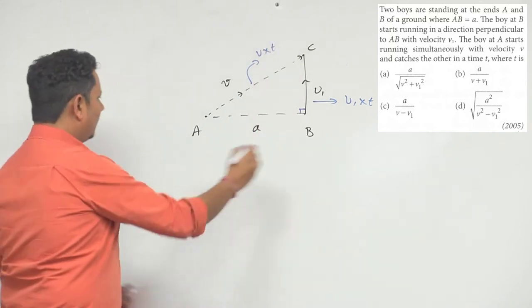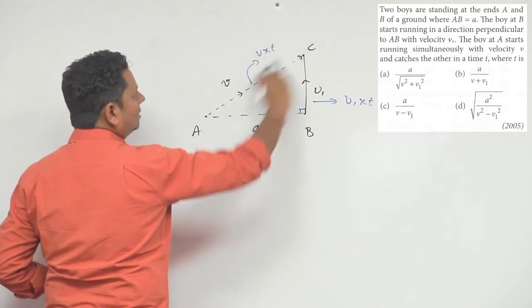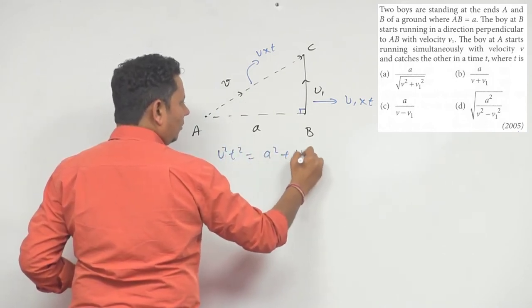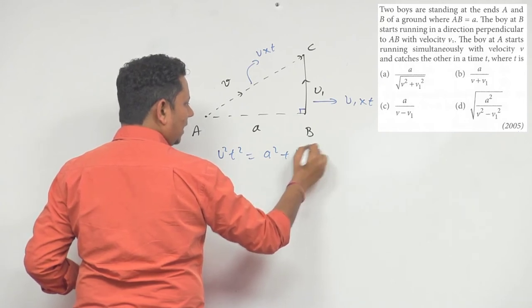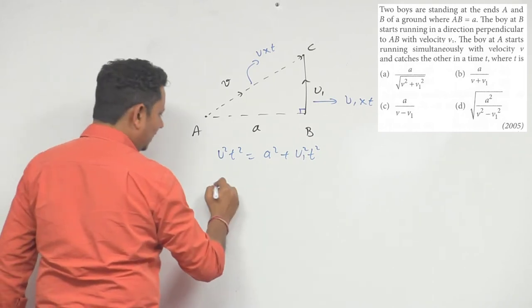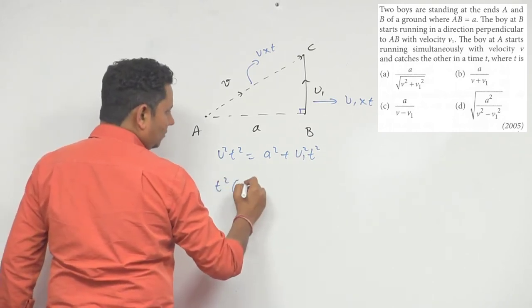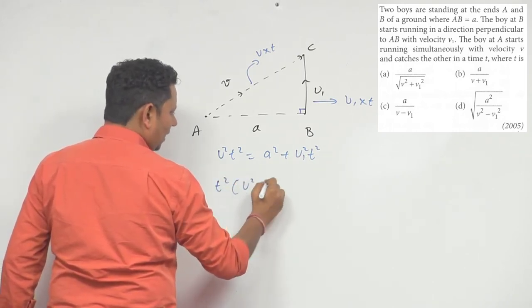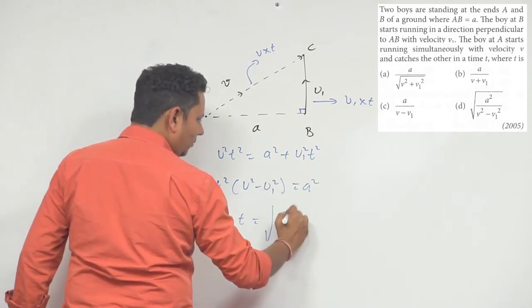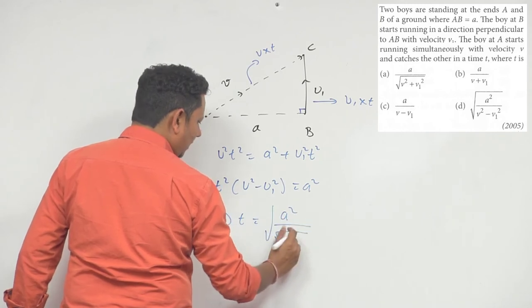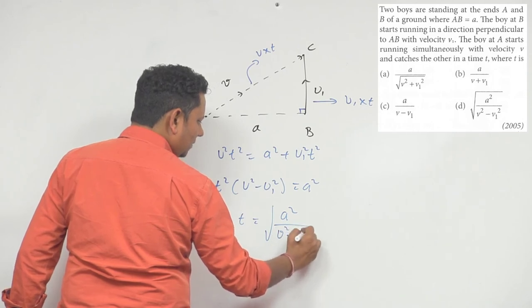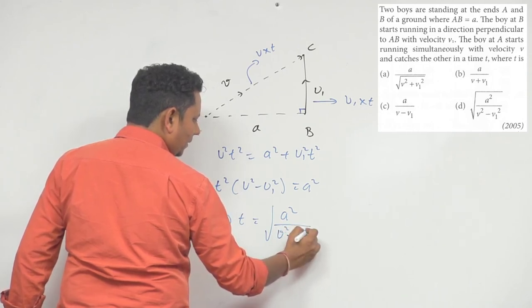Now using Pythagoras theorem we can say V² T² will be equal to A² plus V1² T². If you bring this term here we can say T² (V² minus V1²) will be equal to A², which implies T will be equal to A divided by the square root of V² minus V1².